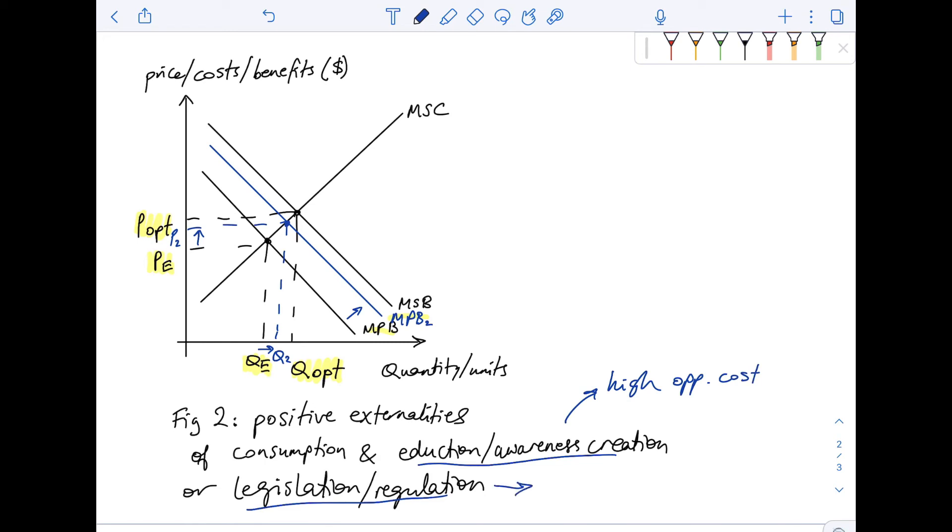While legislation and regulation could be things like mandates, for example, mandates for people to send their kids to school, or vaccine mandates. All of these are ways to sort of encourage the uptake of this product.